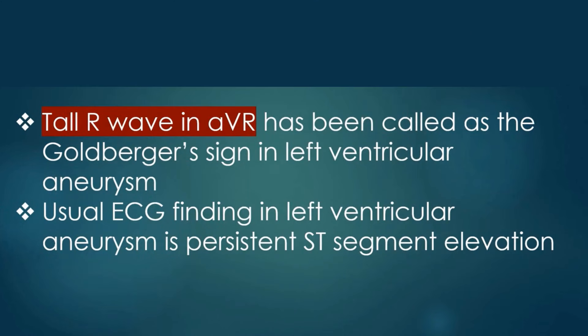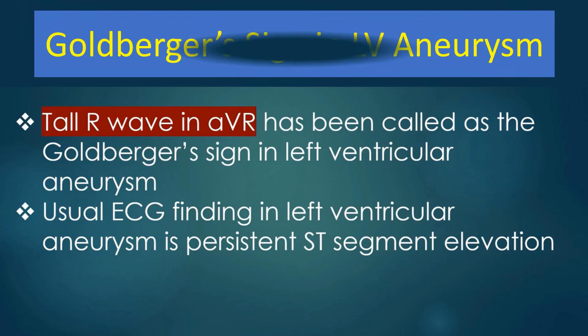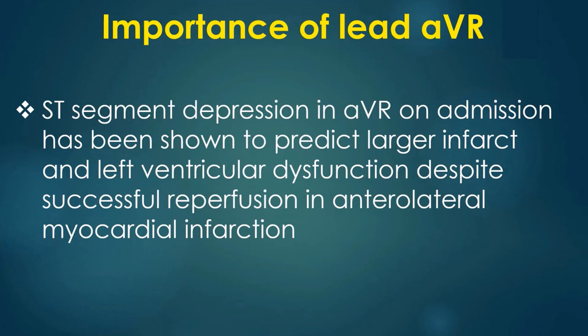Tall R wave in AVR has been called Goldberger's sign in left ventricular aneurysm. The usual ECG finding in left ventricular aneurysm is persistent ST segment elevation. ST segment depression in AVR on admission has been shown to predict larger infarct and left ventricular dysfunction despite successful reperfusion in anterolateral myocardial infarction.